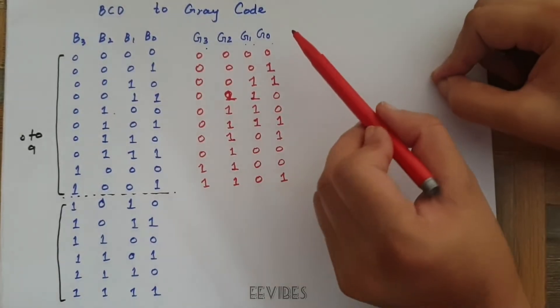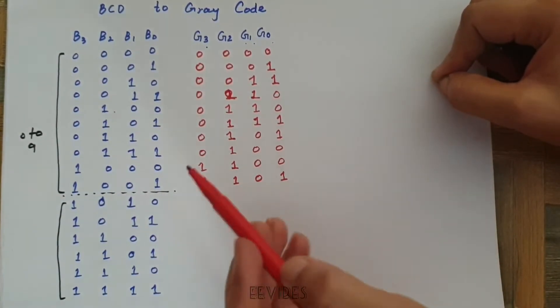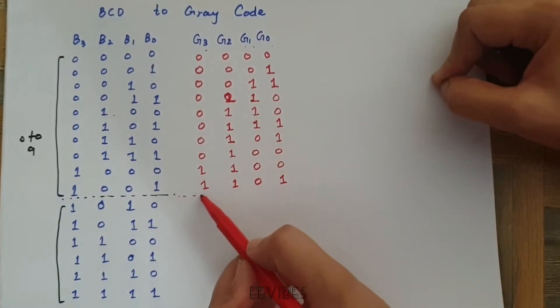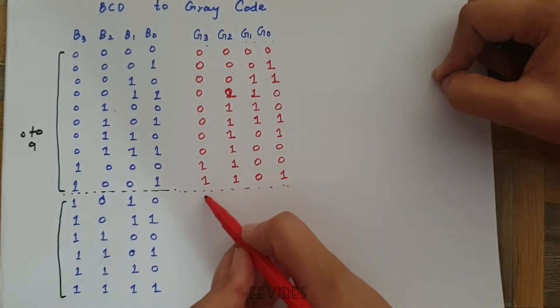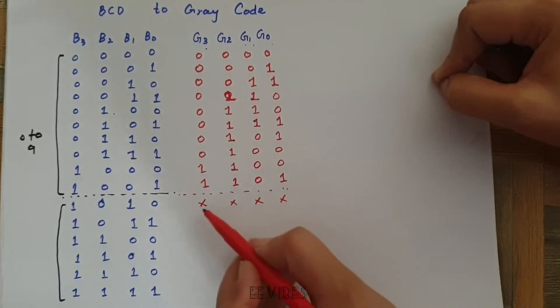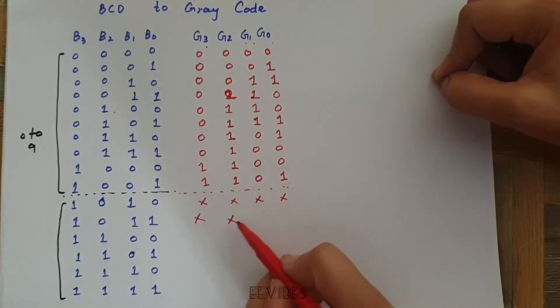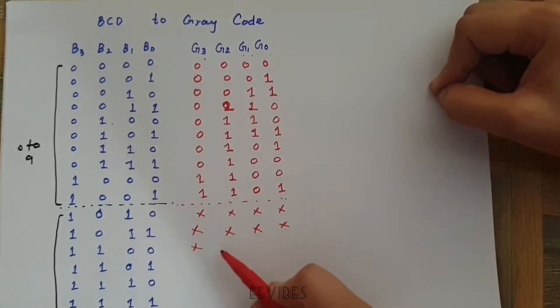Okay, now you can see I have filled this column of the Gray code and I'll just fill it till 9. Because the rest of the combinations are not present in BCD, that's why all the remaining bits are marked as the don't care conditions for the Gray code.